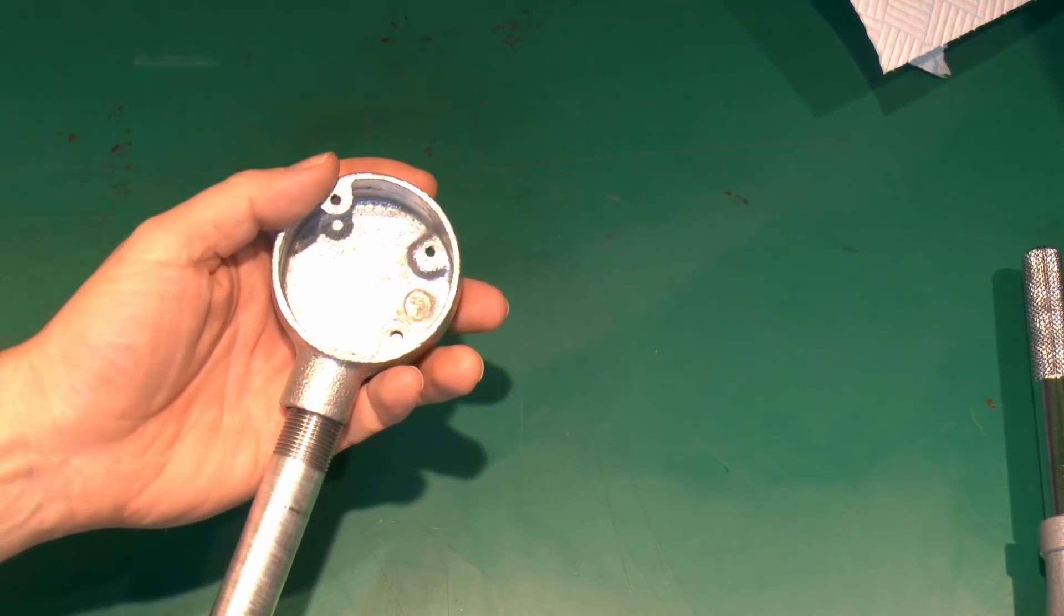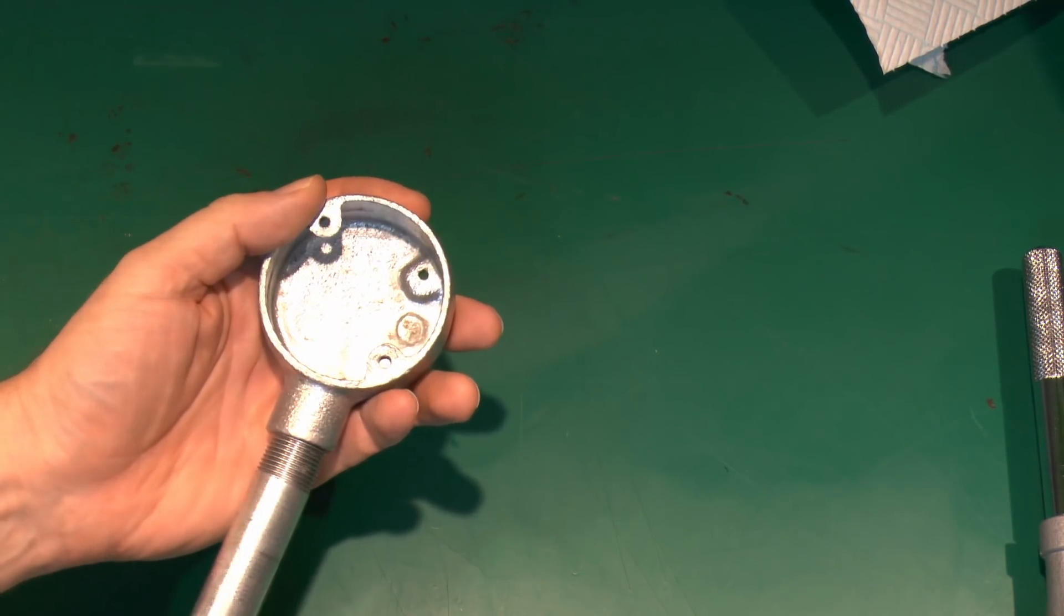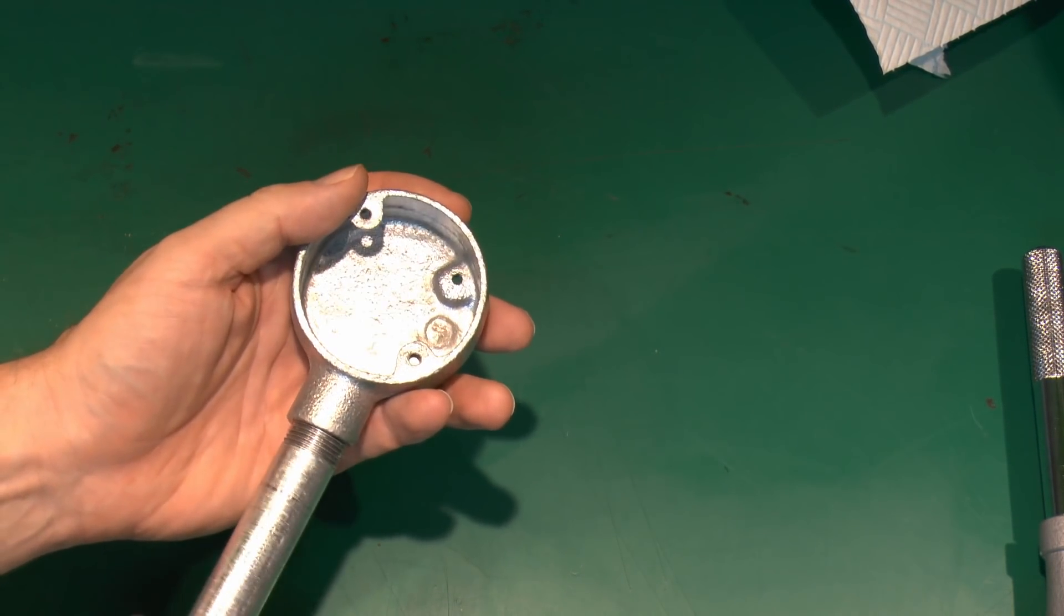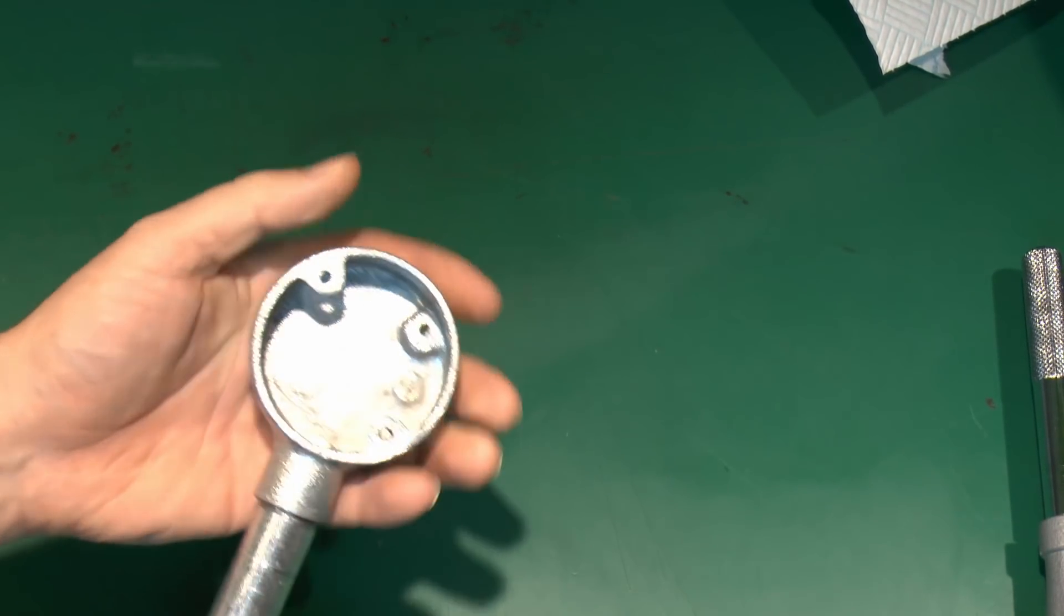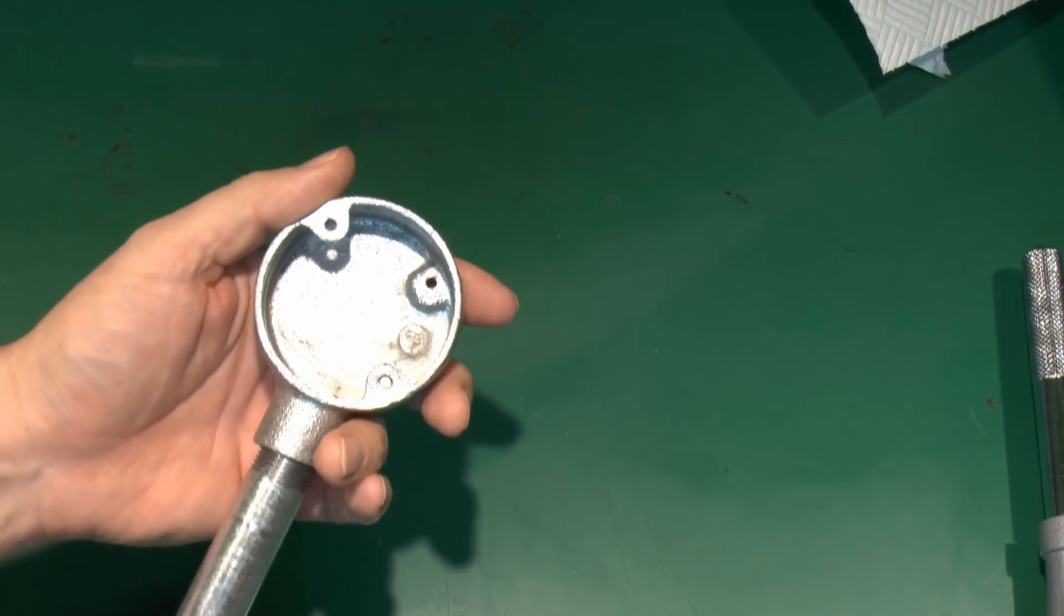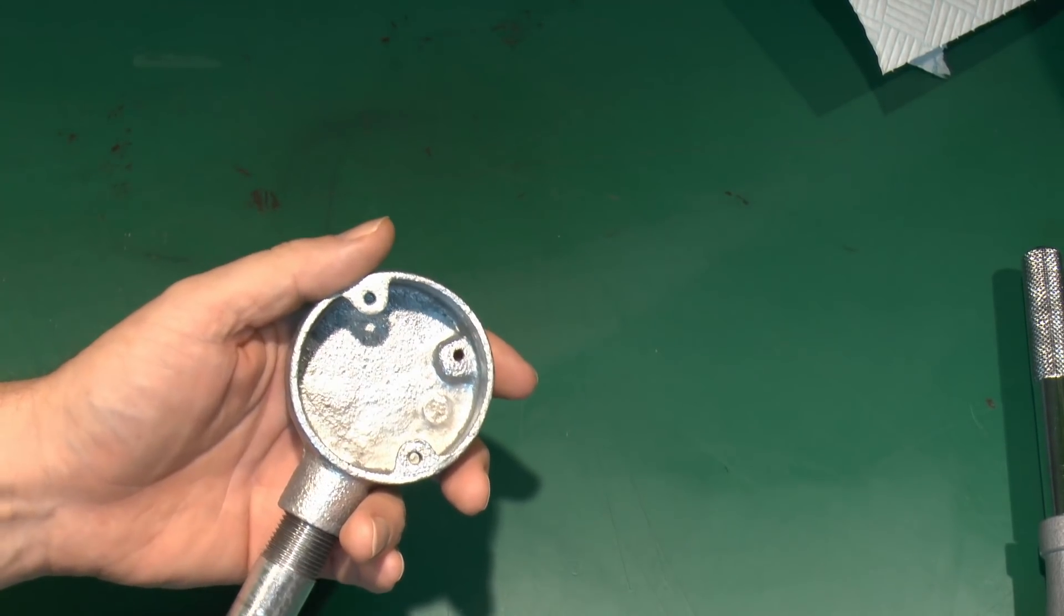So for example this box here, and then you should find that it easily just threads on no problem whatsoever. And if it doesn't then you've obviously made some horrible mistake by using the wrong die or whatever else. So that's pretty much the deal for threading.